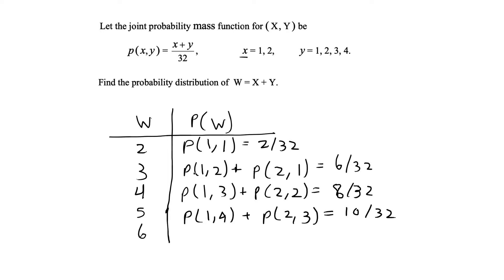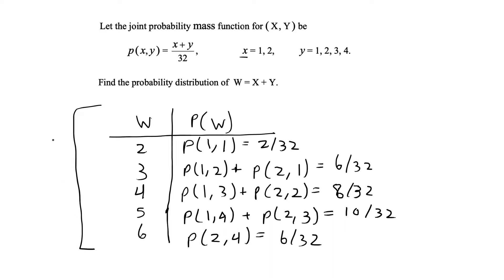Finally, w can take on the value 6 one way: when x=2 and y=4, giving us 6/32. This entire table is the probability distribution of the discrete random variable w, and this is our final answer. As a check, the probabilities should sum to 1: 2+6+8+10+6 = 32, so 32/32 = 1, confirming that w's distribution covers all possible values correctly. We are done with this problem.